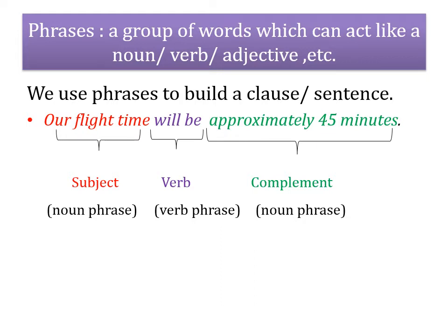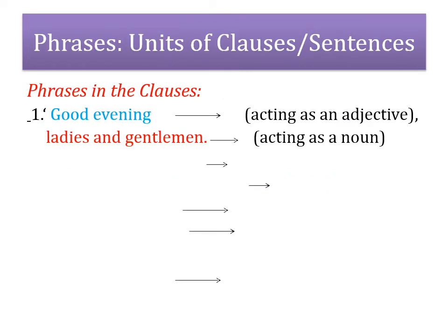Sentences are made up of clauses and also phrases. For example, in 'Our flight time will be approximately 45 minutes,' we find three phrases: 'our flight time' acts like a noun — it's a noun phrase; 'will be' is the verb phrase; and 'approximately 45 minutes' is a complement — 'approximately' is an adverb and '45 minutes' is a noun phrase.